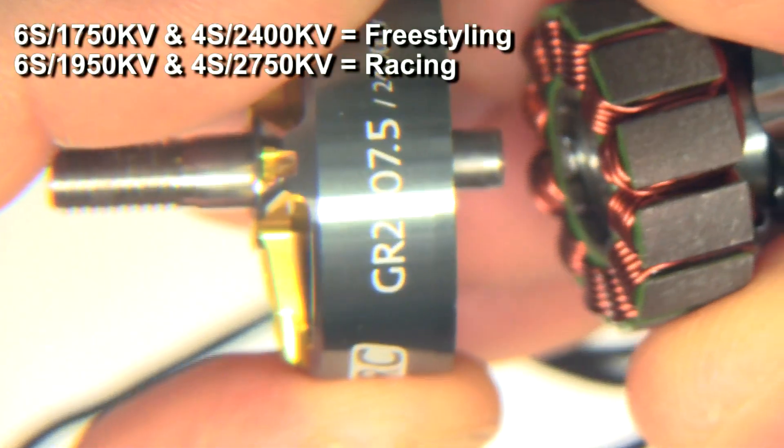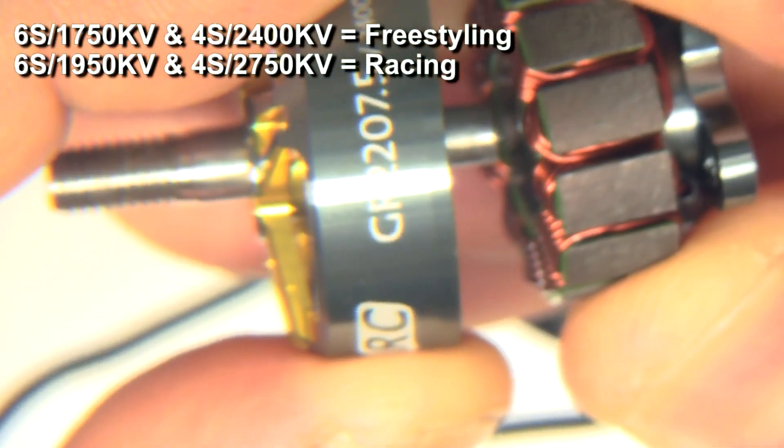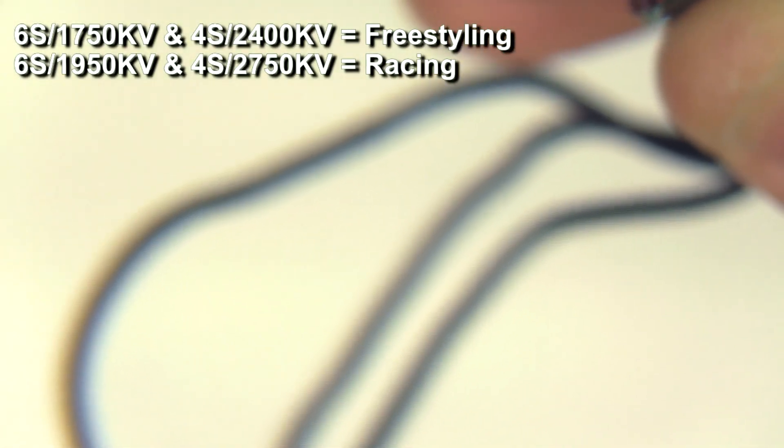So we'll put it on the thrust stand and see what it can do. This one's still 2400, so main focus is on 4S. So what they're saying is the 1750 and 2400 are for freestyle, and the 1950 and 2750 is for race setup.